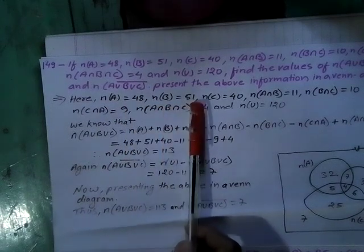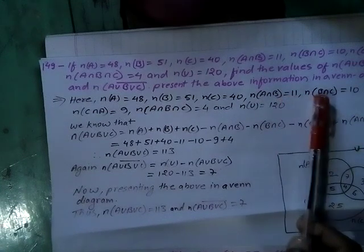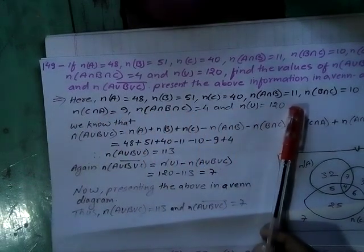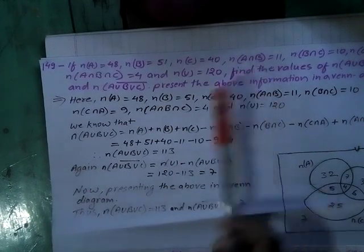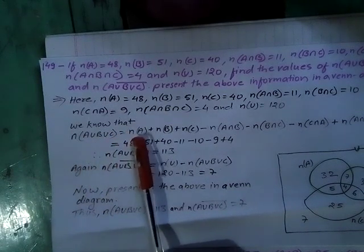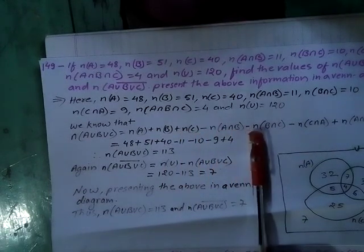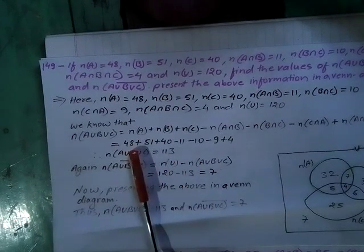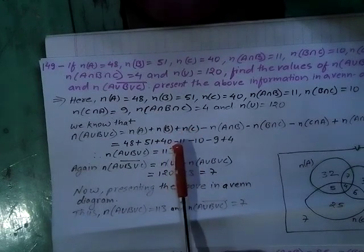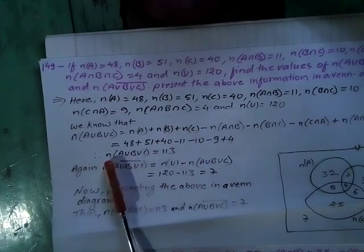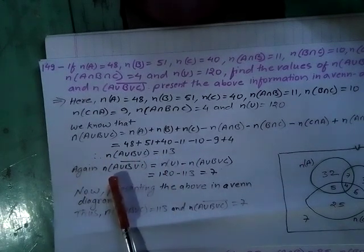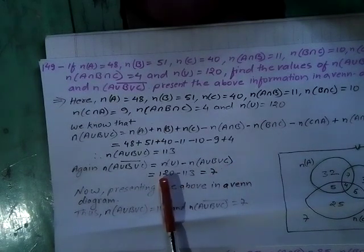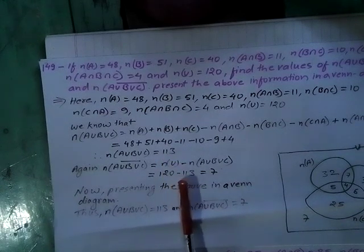Solution: N(A) = 48, N(B) = 51, N(C) = 40, N(A∩B) = 11, N(B∩C) = 10, N(C∩A) = 9, N(A∩B∩C) = 4, N(U) = 120. Applying the formula, N(A∪B∪C) = 48 + 51 + 40 − 11 − 10 − 9 + 4 = 113. Then N(A∪B∪C)' = N(U) − N(A∪B∪C) = 120 − 113 = 7.